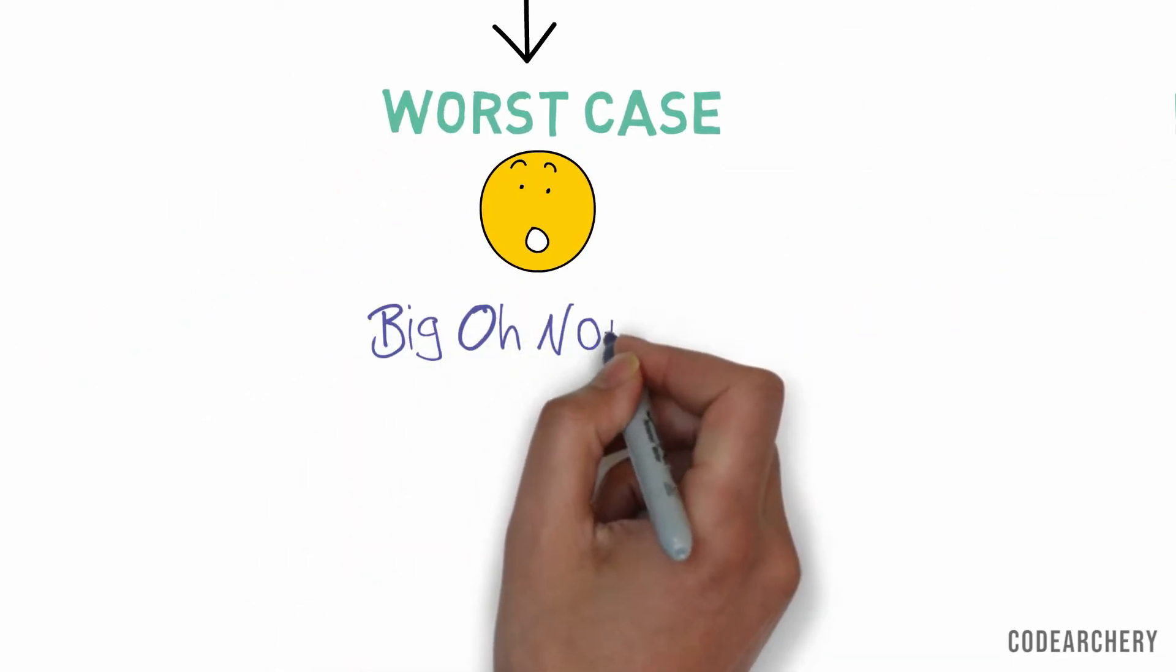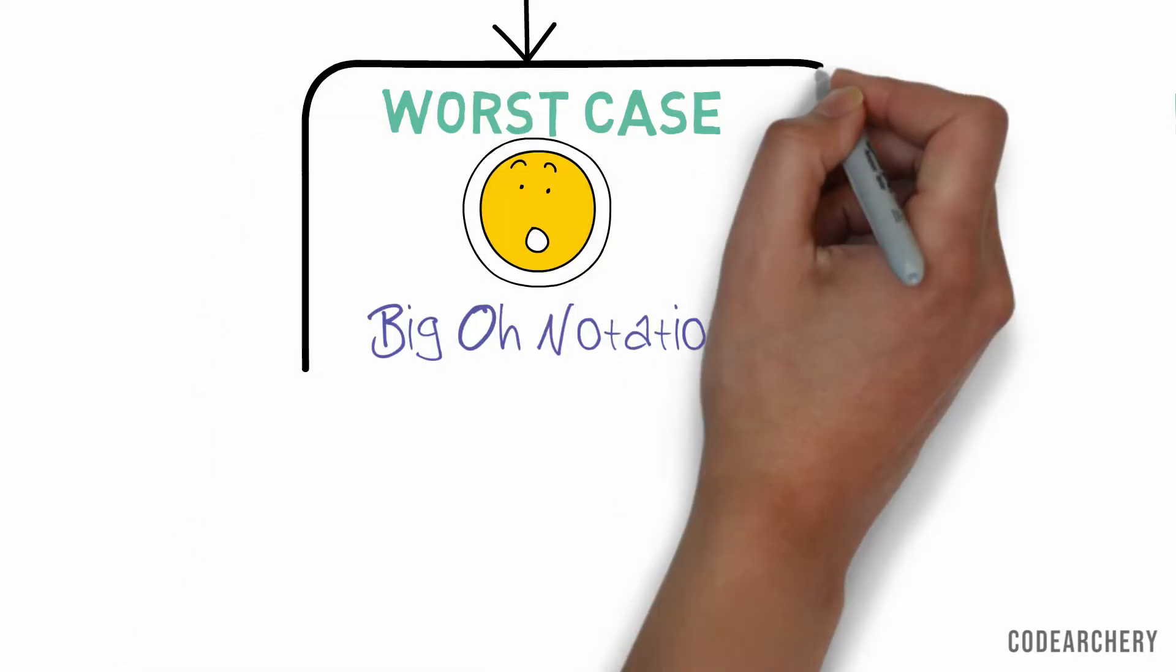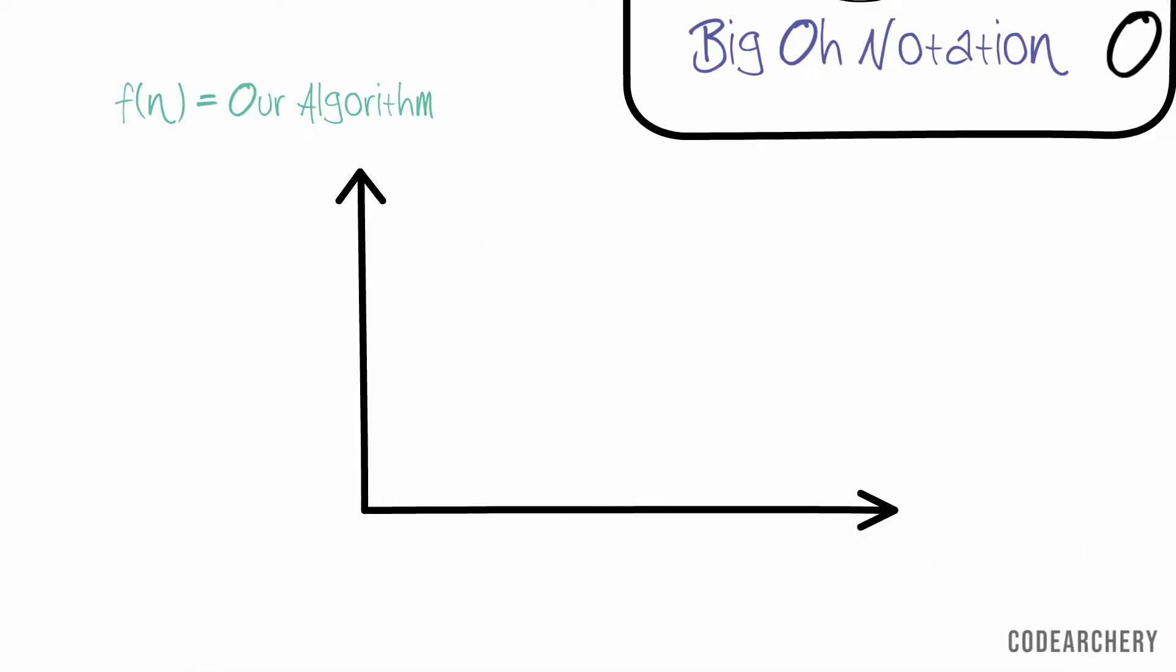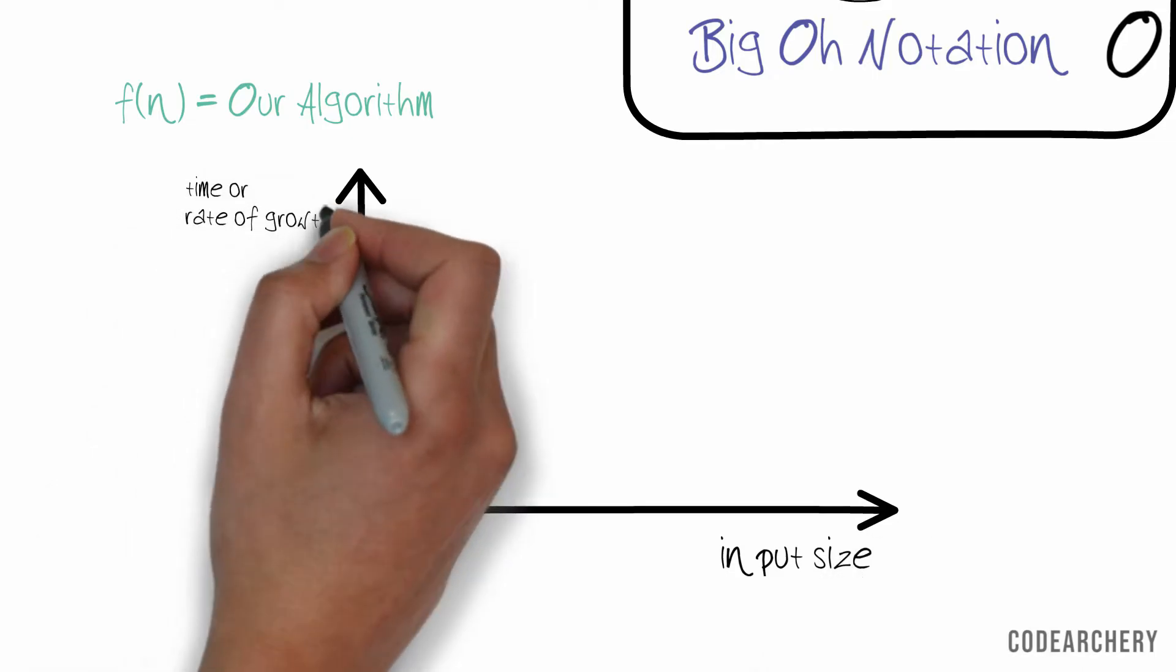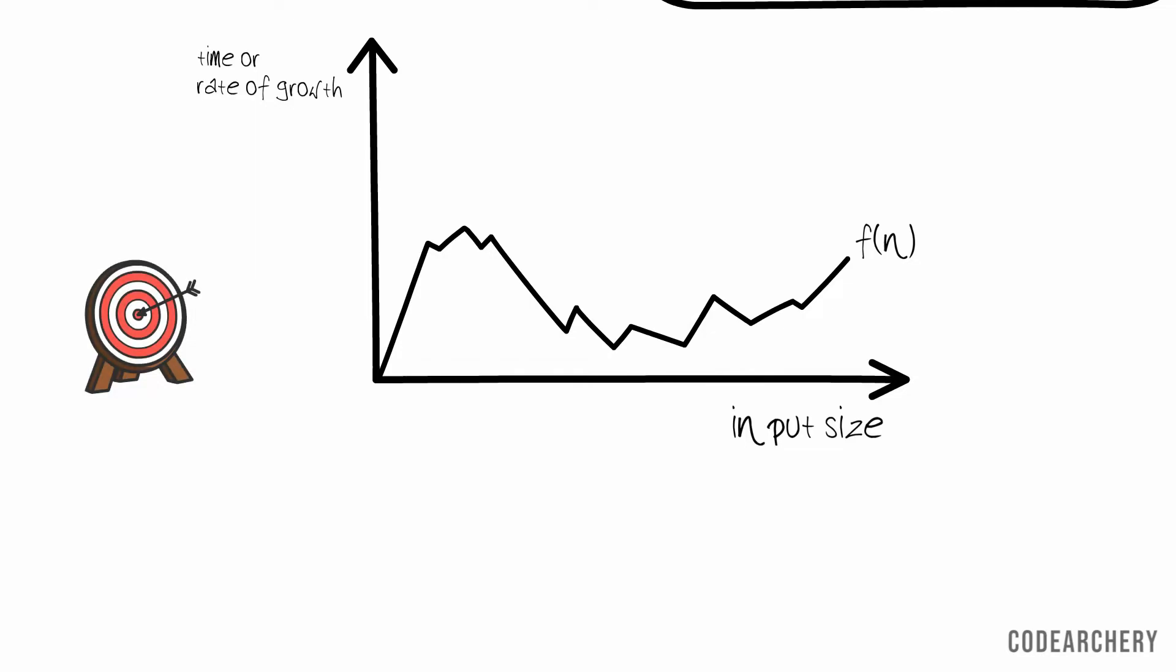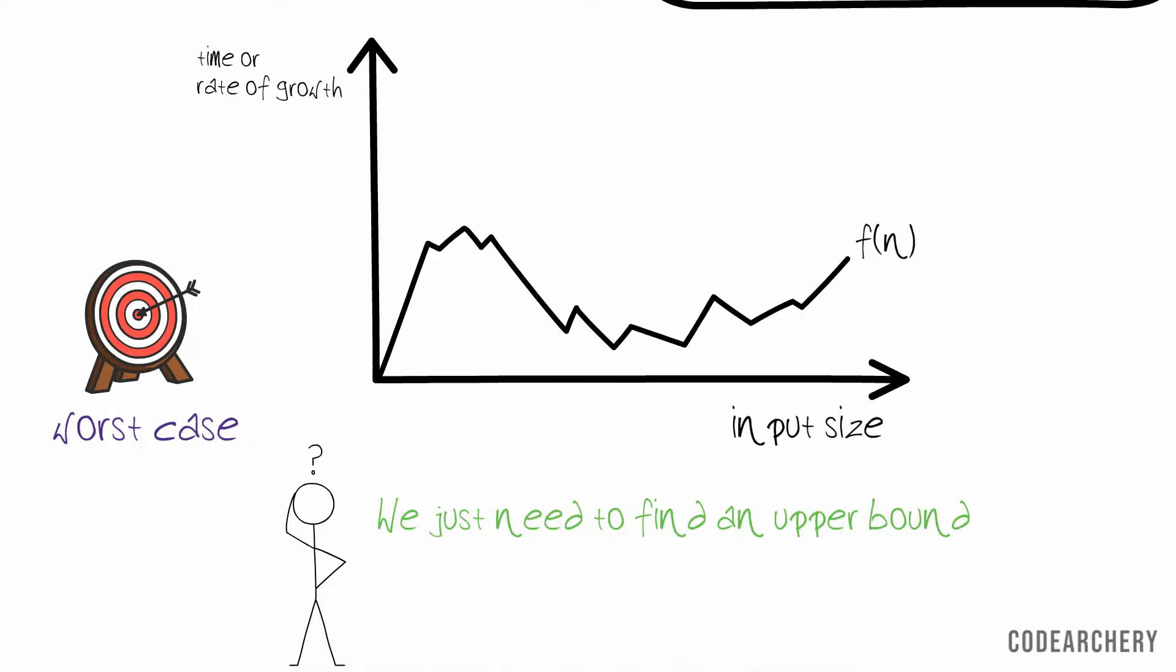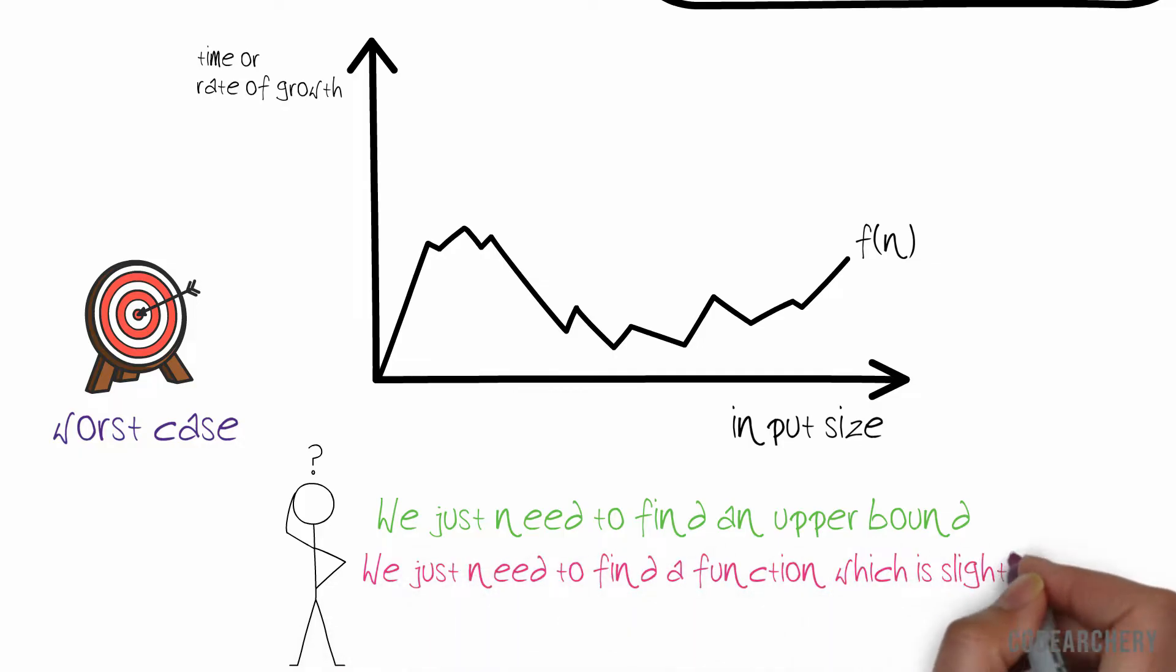Let's start with the worst case. We represent worst case by Big O notation and the symbol is Big O, just like the emoji's face. So first, we will understand Big O notation. Let's say f(n) is a function that represents our algorithm. Okay guys, please don't worry about the math part. It is very easy. Just stay with me. Let's plot a graph for our function. The x-axis represents the input size for our algorithm and the y-axis represents the rate of growth. Let's say this is the graph of our function f(n). Now what is our target? We have to find the worst case complexity, so what will you do? The solution is simple. We just need to find an upper bound, that is, we just need a function which is slightly greater than our function f(n).